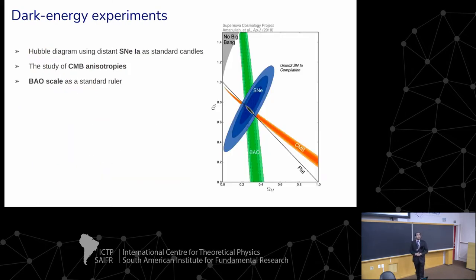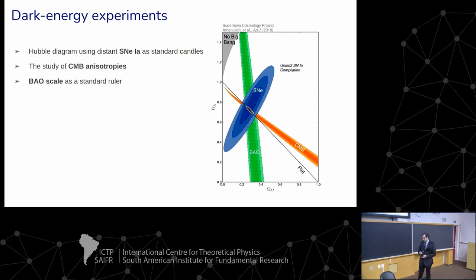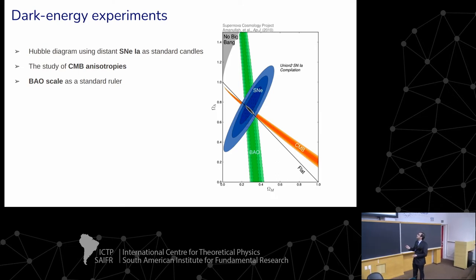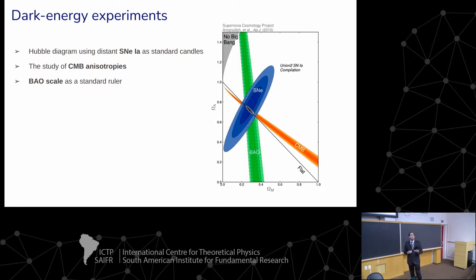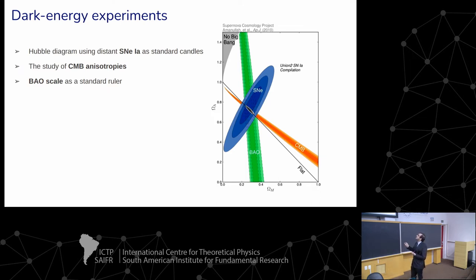Up to date, the three most important dark energy experiments are the following: the Hubble diagram using distant supernovae 1a as standard candles, the study of CMB anisotropies, and the Alcock-Paczynski test using the BAO scale as a standard ruler. In this plot you can see the cosmological constraints for two fundamental cosmological parameters — omega matter and omega dark energy — for the three experiments. Two important conclusions can be made: the constraints are consistent with each other even though the experiments are independent, and the constraints have substantially different orientations. So a joint combined analysis allows us to put even tighter constraints on the parameters.